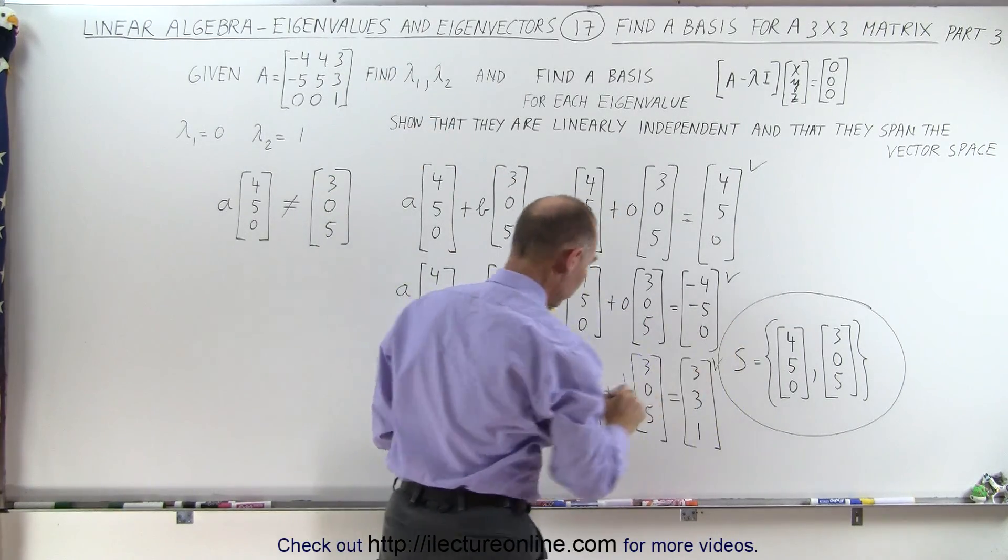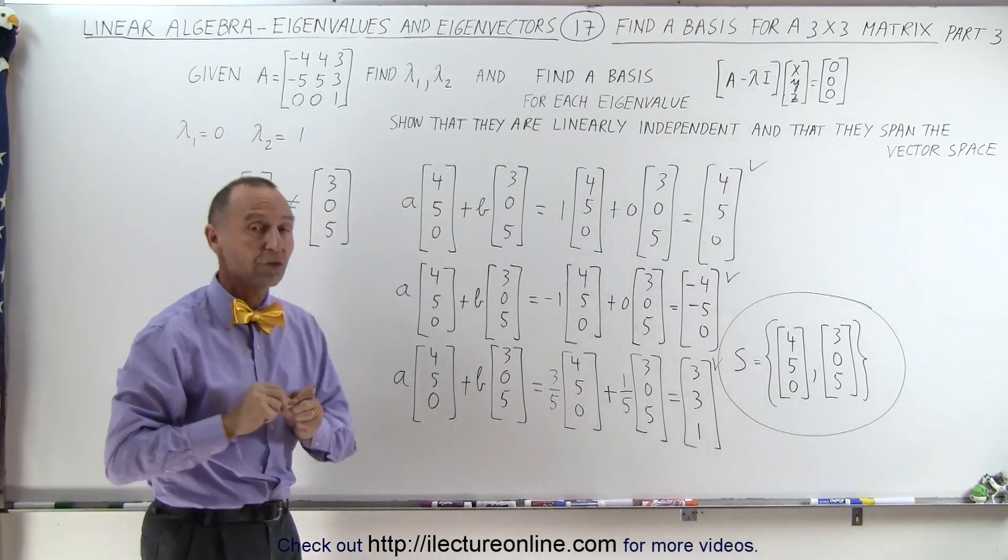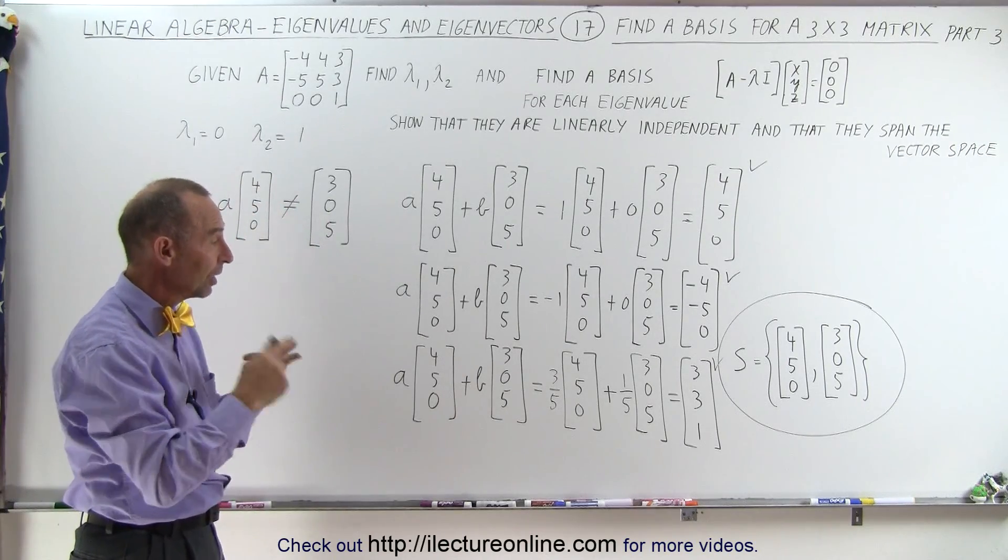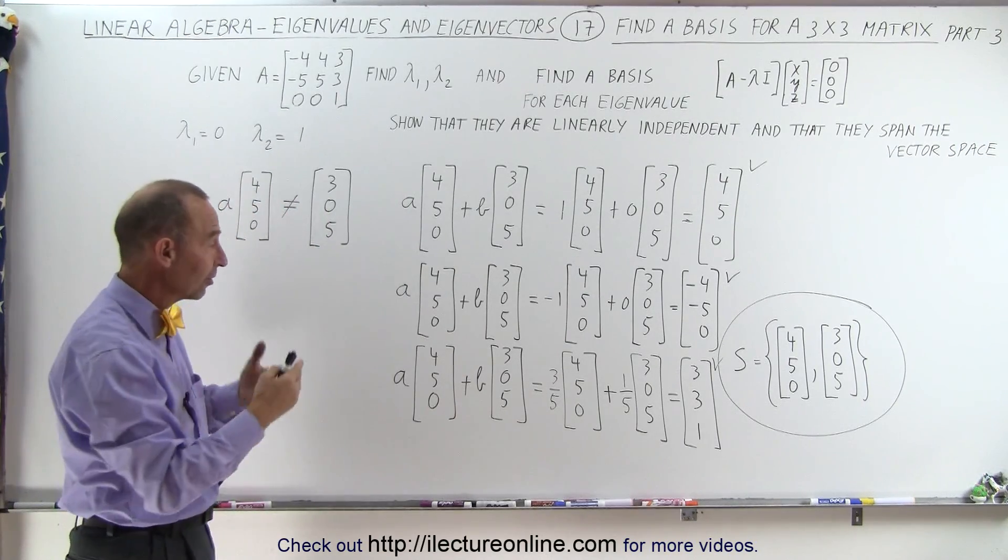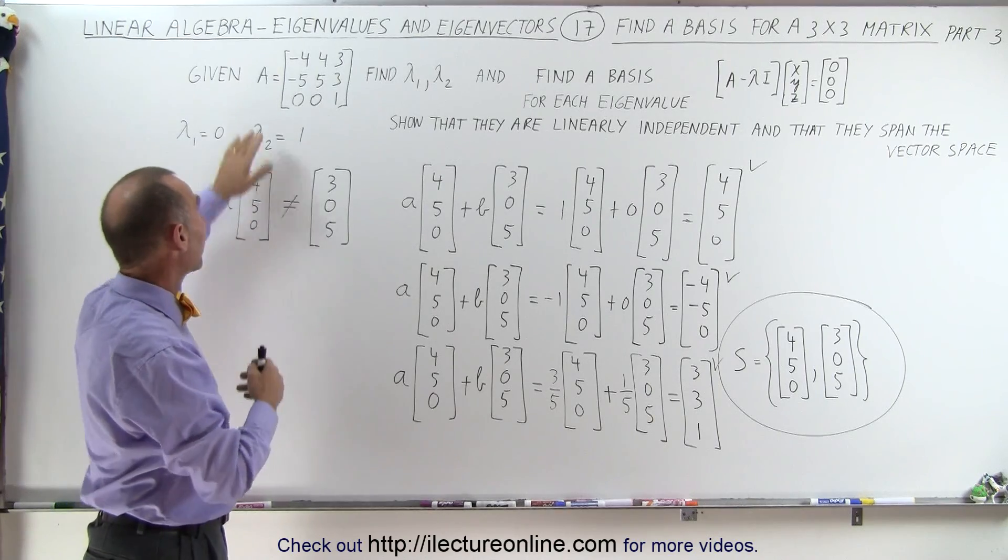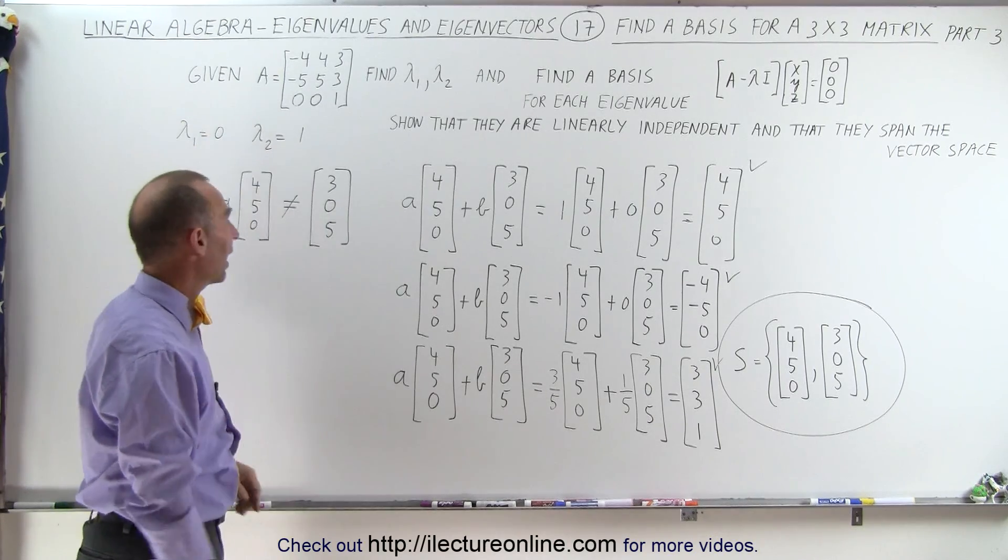And it shows me that those two eigenvectors do span the vector space. And so they're linearly independent, they span the vector space, it's a legitimate basis for that vector and this particular eigenvalue.